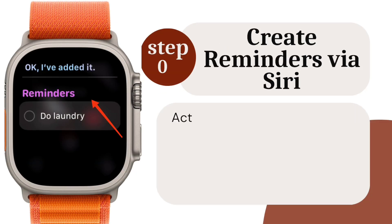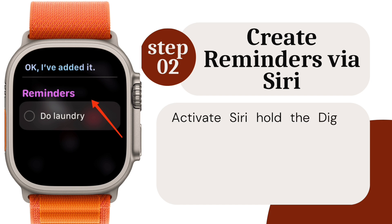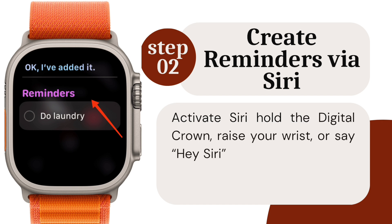Step 2: Create reminders via Siri. Activate Siri by holding the digital crown, raising your wrist, or saying "Hey Siri," and say "Remind me to [task]."